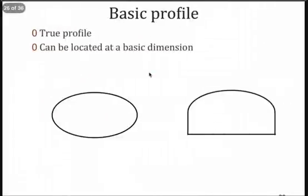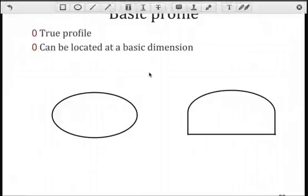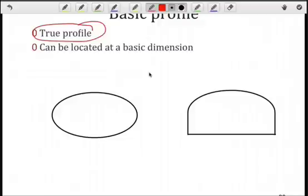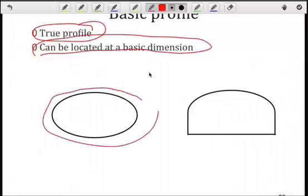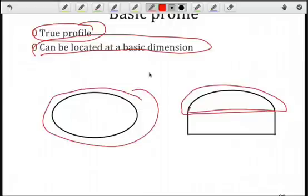To understand how to interpret this profile tolerance, you need to know the basic profile. You can think of that in a similar way as when we talked about basic dimension. There is some true profile or nominal profile that is specified by the designer. We can also locate this profile based upon a basic dimension. Here we have an oval-shaped profile, which represents the theoretical or basic profile. And here we have a curved surface. This perfect curve represents that basic profile.